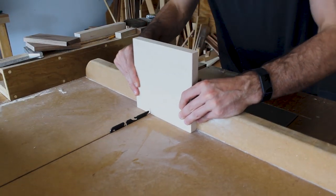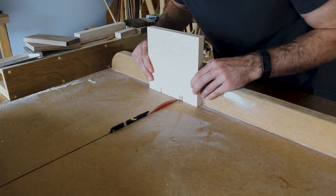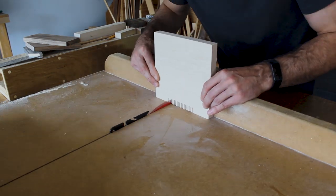To connect the base and the vertical walls, I'll be using a couple simple notches, and I'll be using my crosscut sled to create those notches.